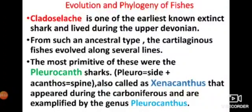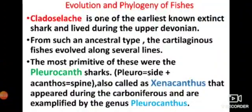Continuing on, Cladoselache is one of the earliest known extinct sharks. We mention it when studying the evolution and phylogeny of fishes. Cladoselache lived during the upper Devonian period. It is an ancestral type, and from this ancestral type the cartilaginous fishes evolved along several lines. The most primitive fishes are the pleurocanth sharks.